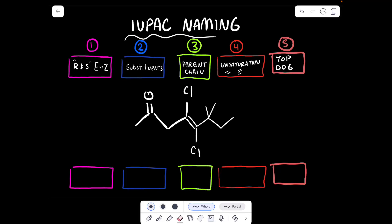Hello guys and welcome back to my channel. Today we are going to make the IUPAC name for this molecule based on the five box method. I went over this on my TikTok channel. The five box method says that stereochemistry goes in the first box, substituents in the second box, the parent chain in the third box, any unsaturation in the fourth box, and the top dog functional group, which the molecule will be named after, goes in the fifth box.